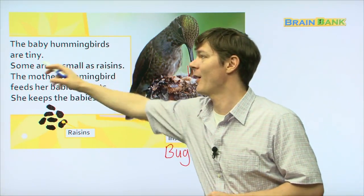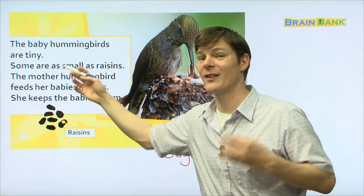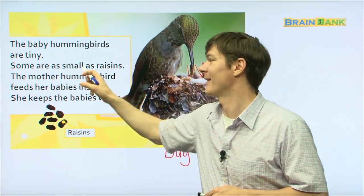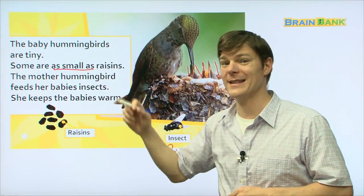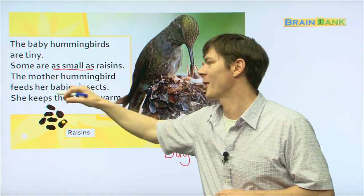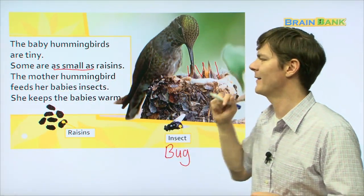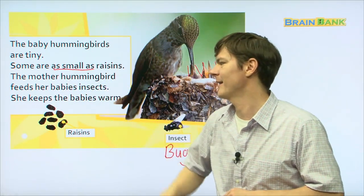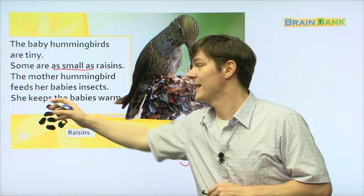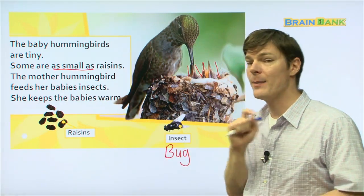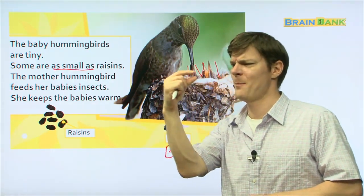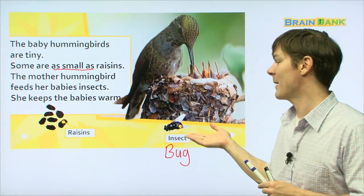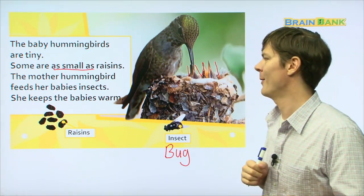Anyway, let's find out what the mother hummingbird is doing. The baby hummingbirds are tiny. Everyone repeat after me. The baby hummingbirds are tiny. Some are as small as raisins. Everyone, read with me. Some are as small as raisins. The mother hummingbird feeds her babies insects. She's feeding the insects to the baby. Everyone read with me. The mother hummingbird feeds her babies insects. She keeps the babies warm. So, the baby hummingbirds are as small as raisins. The cap of this pen is bigger than the babies. And she's feeding the babies these insects and keeping them warm. Wow. What a great mother.